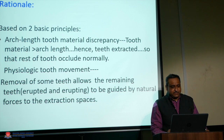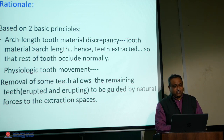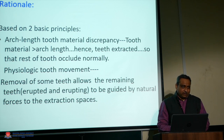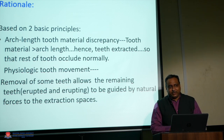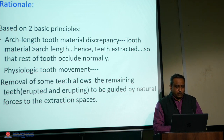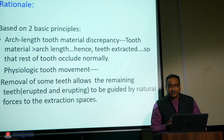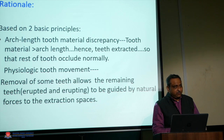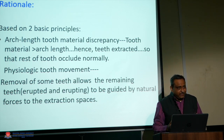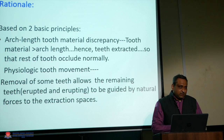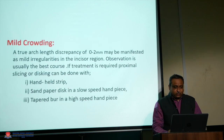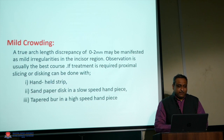The rationale of serial extraction is based on two principles. First, there is arch length–tooth material discrepancy, meaning tooth material is in excess compared to arch length, creating a severe need to extract some teeth so the rest occlude normally. Second, once a tooth is extracted, physiologic tooth movement naturally occurs into that extracted space, resulting in the achievement of proper occlusion.